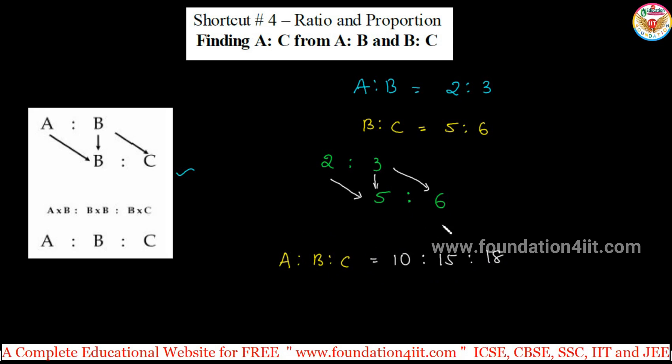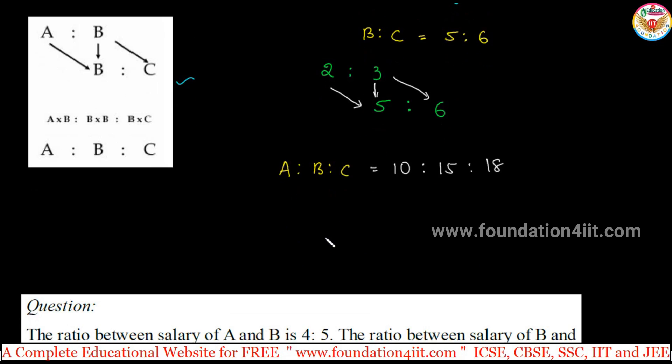If they asked only A is to C, 10 is to 18. So, A into B, first we will multiply this and next to B into B, again B and C. This concept let me explain with one example here.